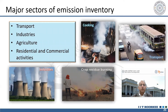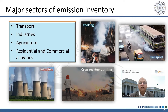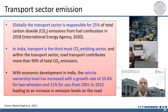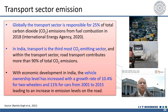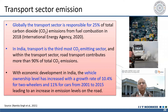Major sectors for emission inventory include transport sector, industries, agriculture, and residential and commercial activities. For the transportation sector, around 25% of total carbon dioxide emissions globally come from transportation. There is a large contribution to greenhouse gases. Similarly, CO and NOx emissions from transportation are also precursors of ozone. That is why transport sector emission inventory is so important.